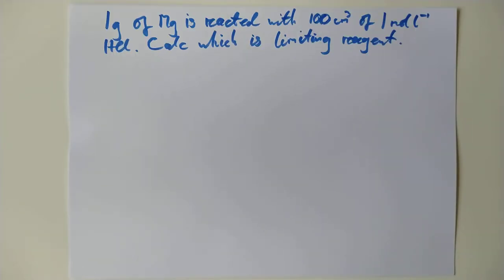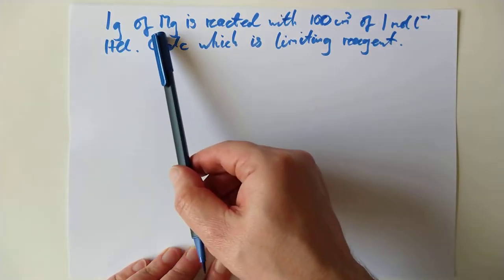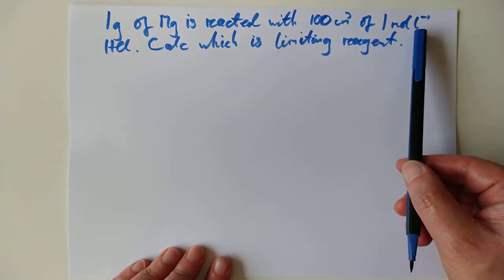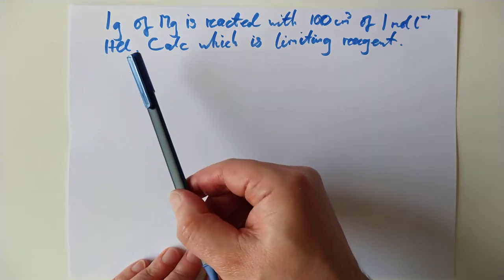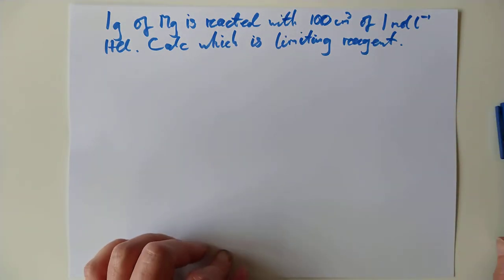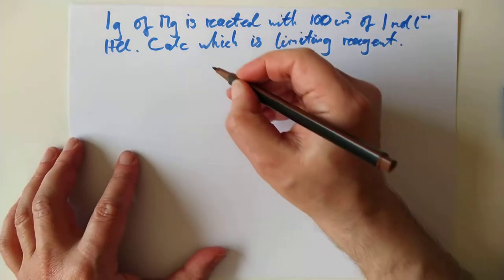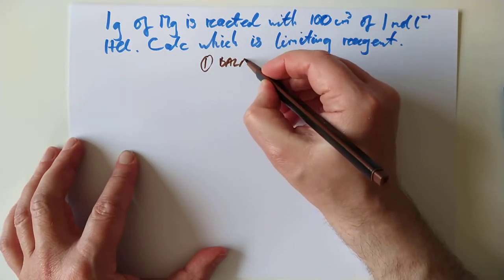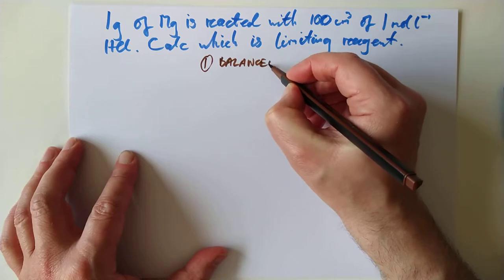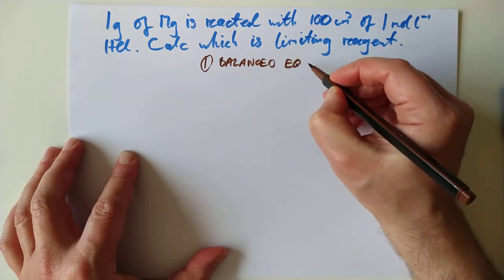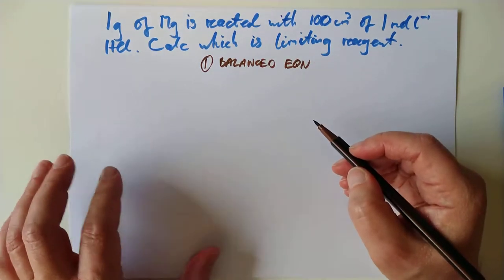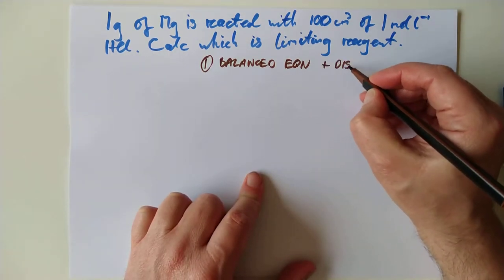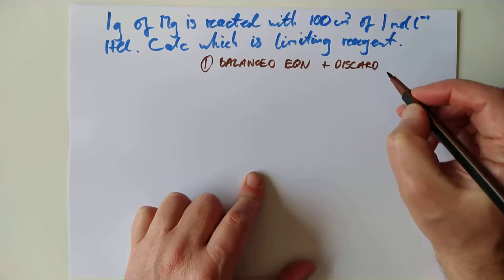So here we go — these are typical written questions. We've got one gram of magnesium reacted with 100 centimetres cubed of one mole per litre hydrochloric acid. Calculate which is the limiting reagent. The first thing we need to do is get ourselves a balanced equation. Once you've got the balanced equation, you can discard all the other things except the chemicals you're interested in — junk anything you don't need to worry about, pay attention to the things you do.